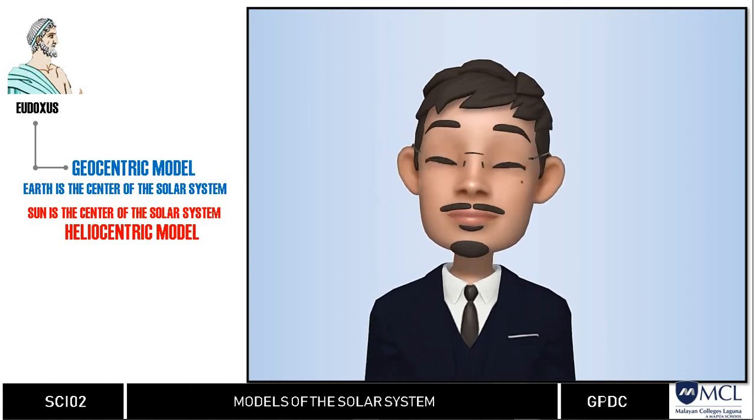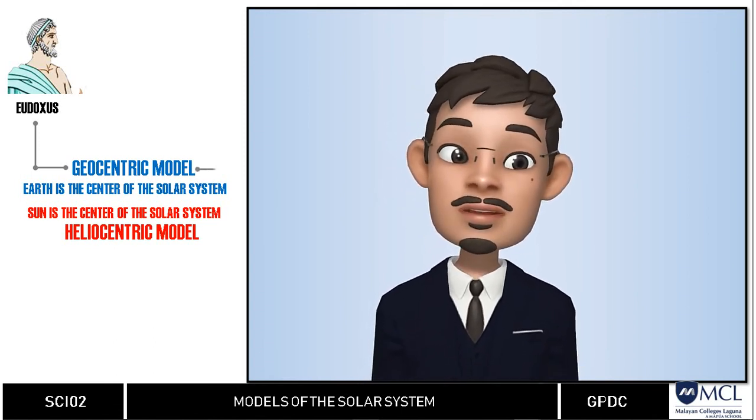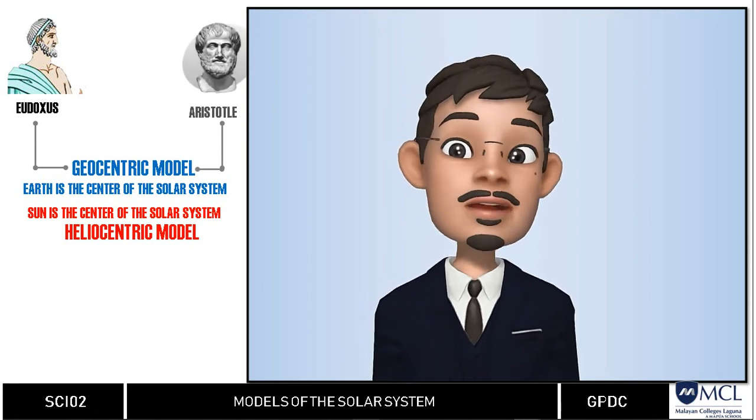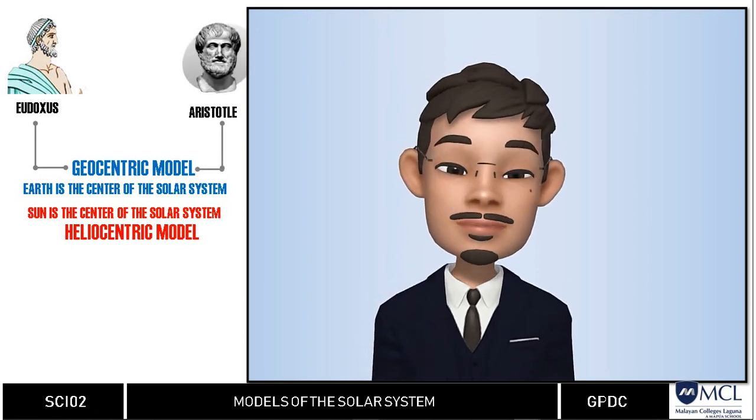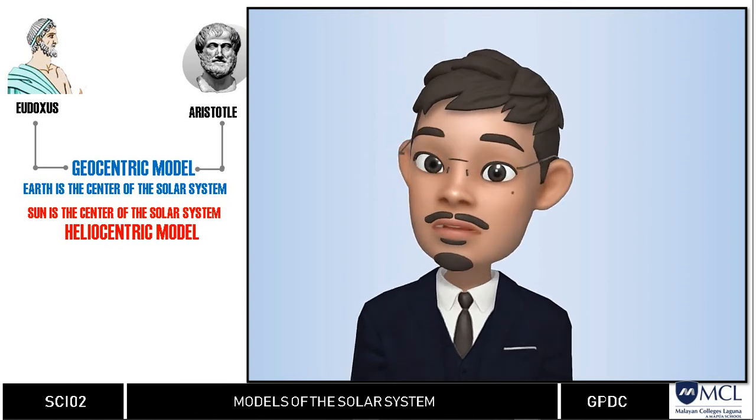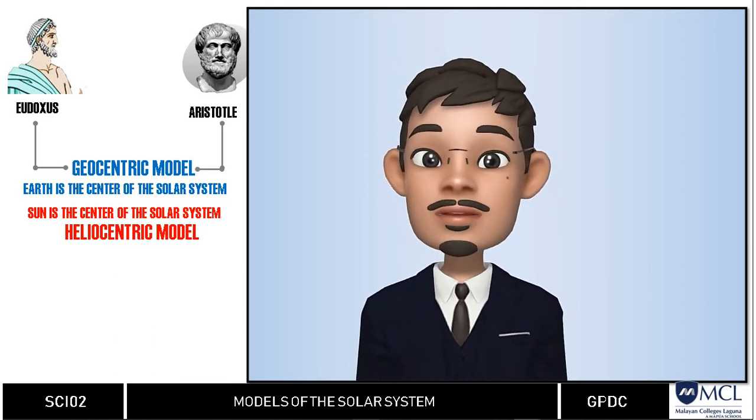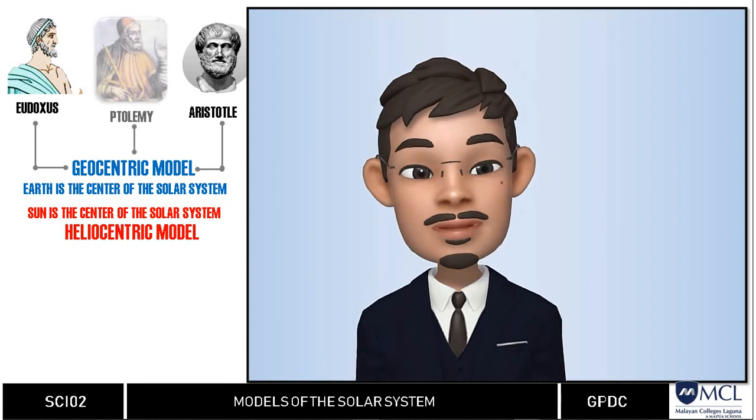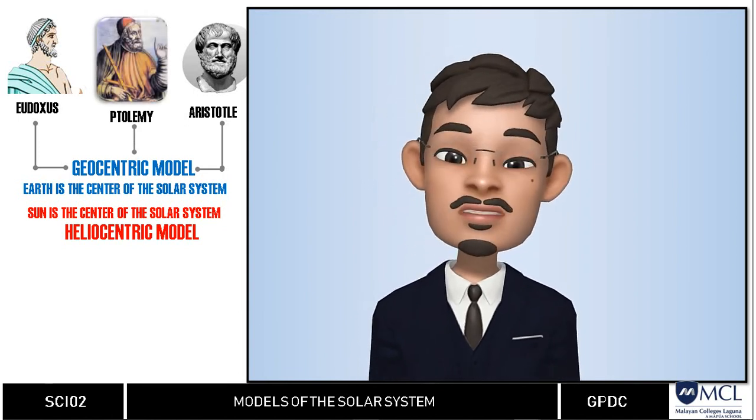We also have Aristotle which also placed the sun and other planets around the earth. He added that the universe must be finite in terms of space but eternal in time. Ptolemy adapted Aristotle's idea but he added that the planets do not orbit perfectly around.